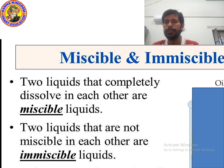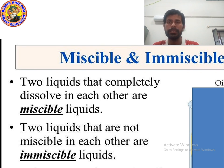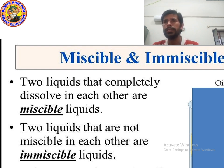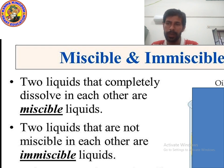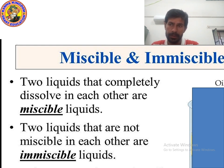So what is the meaning of miscible? Two liquids that completely dissolve in each other are miscible liquids. And two liquids that are not miscible — that do not dissolve in each other — are immiscible liquids.